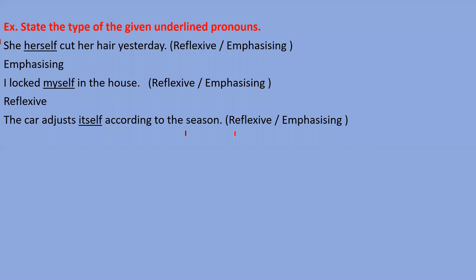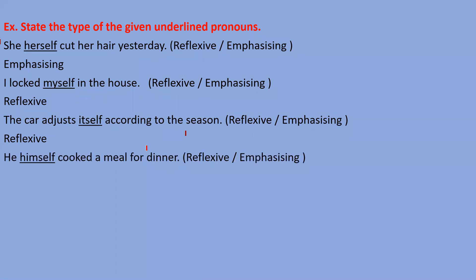Next: 'The car adjusts itself' — Vivek Maan says reflexive pronoun. Very good, that's correct, because car and itself are the same thing and itself is used as the object. Next: 'He himself cooked a meal for dinner' — Vanshika says reflexive, but the correct answer is emphasizing, because himself is placed right after the subject to emphasize it.